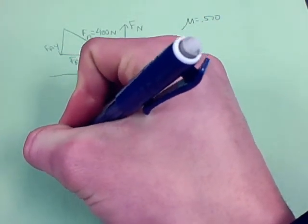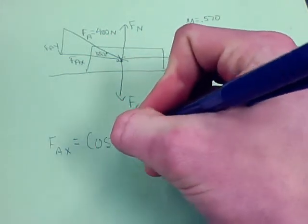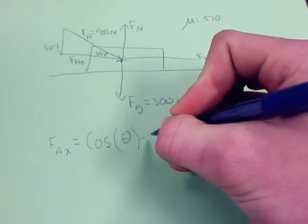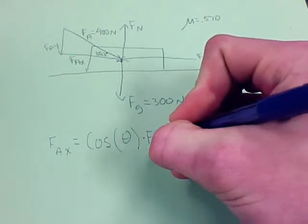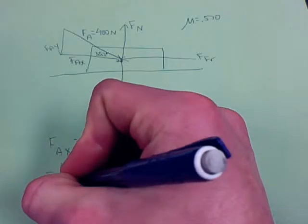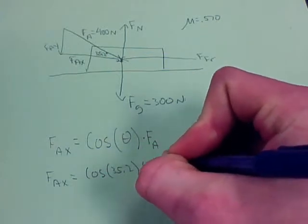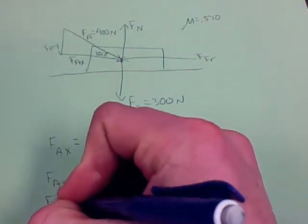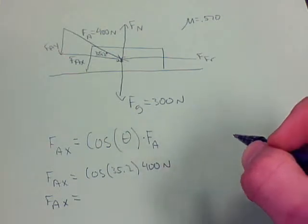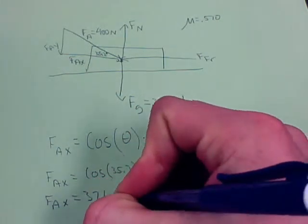I'm going to be solving for Fax first, and that is Fax equals cosine of 35.2 theta times FA. That's your letter equation. So I'm going to put numbers into that. It's going to be Fax equals cosine 35.2 times 400. And so that gives you 326.9 newtons.